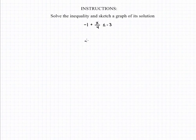In order to solve this inequality, we need to isolate the variable X. We can begin doing this by adding one to both sides of the inequality. That will give us X over 4 is less than or equal to negative 2.